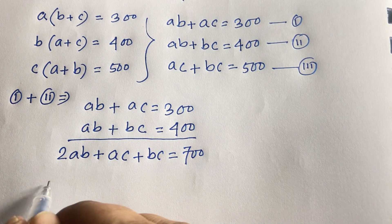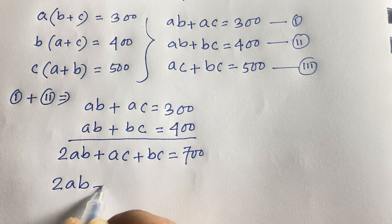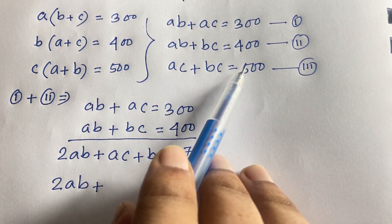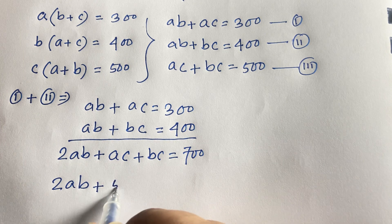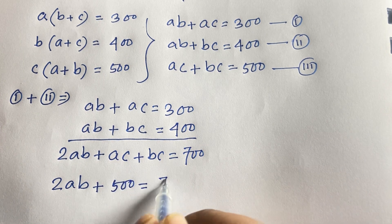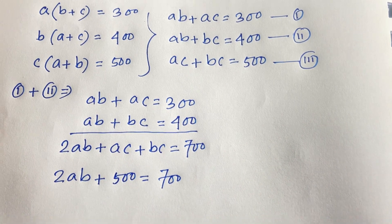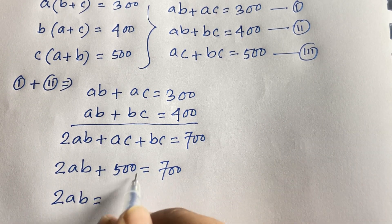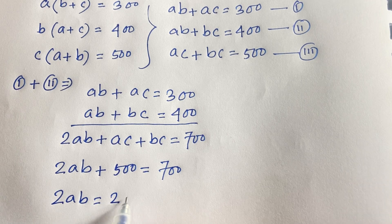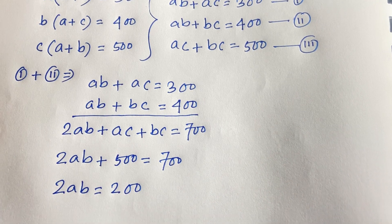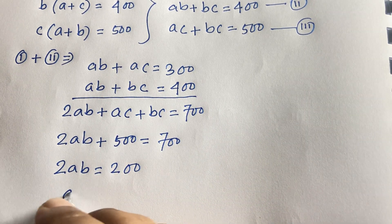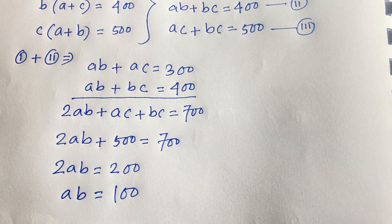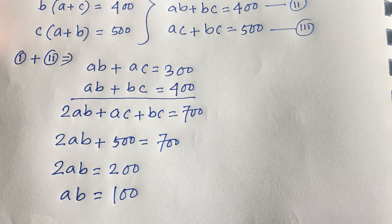In this expression, 2ab plus (ac plus bc) equals 700. We know that ac plus bc equals 500 from our third equation. So substituting: 2ab plus 500 equals 700, which gives 2ab equals 200. Dividing both sides by 2, we find ab equals 100.